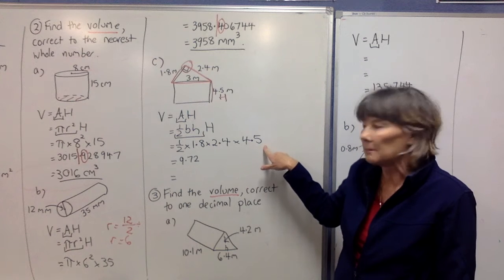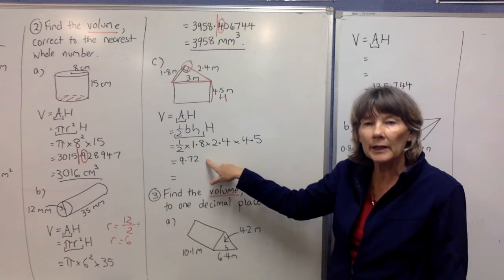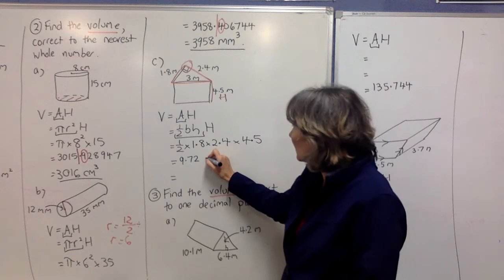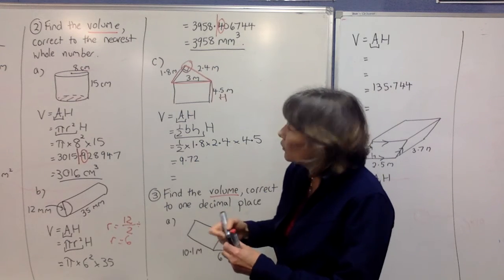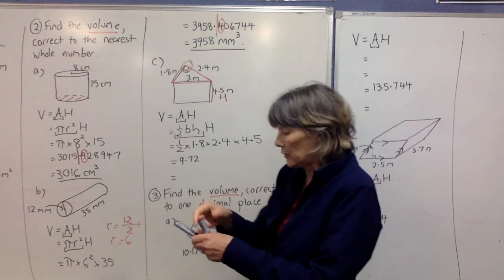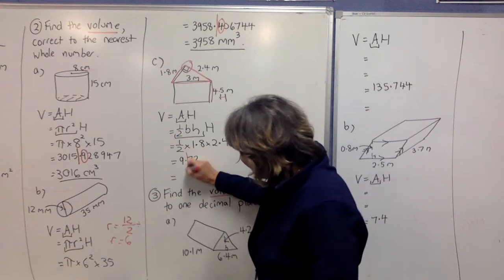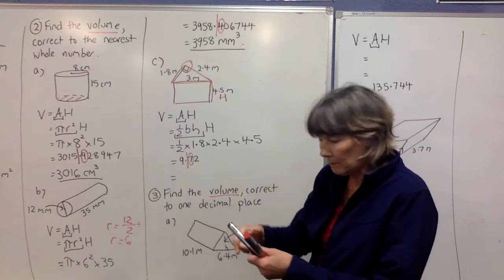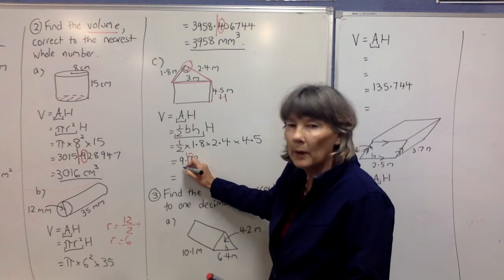We put the 4.5 in here. Now if you put that in your calculator, it's going to be 9.72. We're doing volume, so it's meters cubed, but before that we're rounding off to the nearest whole number. Draw your line after the whole number part. 7 is 5 or more, so I'm going to take our 9 up by 1, which will go to 10, and it's meters cubed.